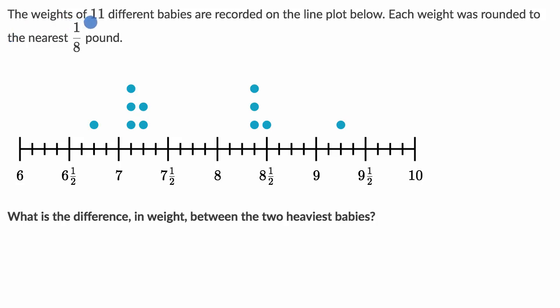We're told that the weights of 11 different babies are recorded on the line plot below. We see there's 11 data points. Each one represents a different baby whose weight is recorded. Each weight was rounded to the nearest 1/8th of a pound.